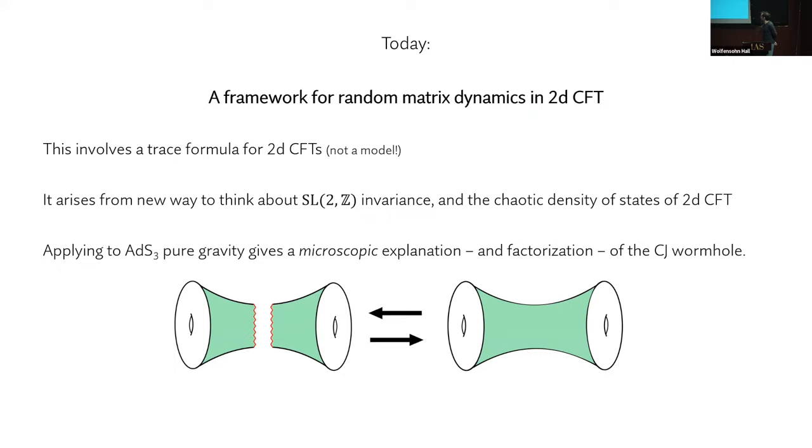So today we present a framework for random matrix dynamics in bona fide CFT2. This is not a model. These are techniques that apply to generic 2D CFTs. And they come from thinking about modular invariance and chaos in a new way. And if we apply them to the AdS3 pure gravity problem, we can give a microscopic explanation and indeed a factorization of the Kotler-Jensen wormhole.